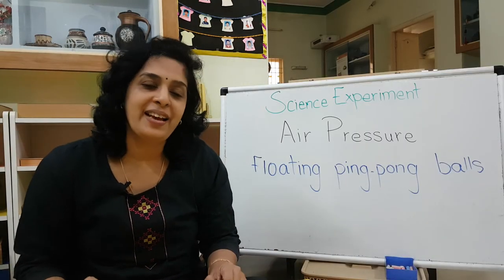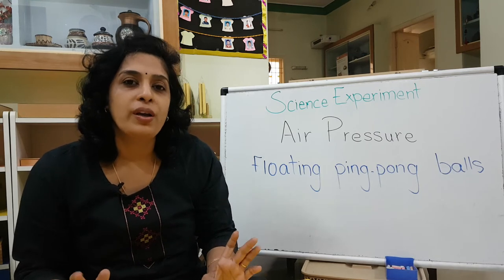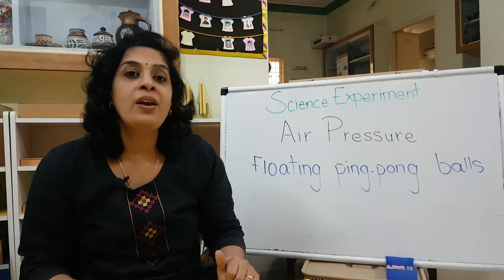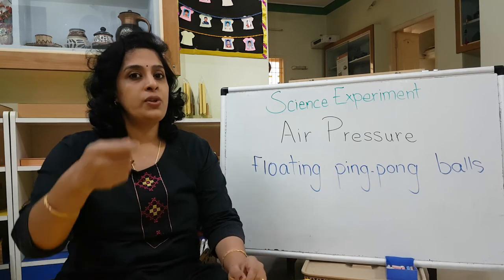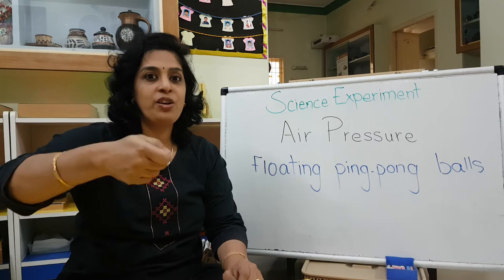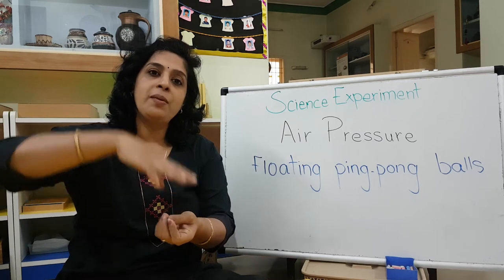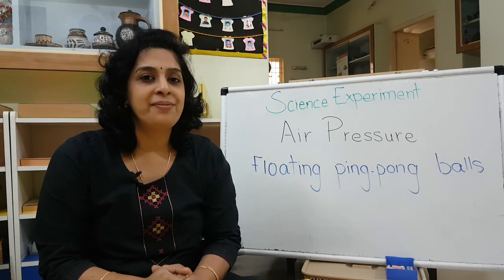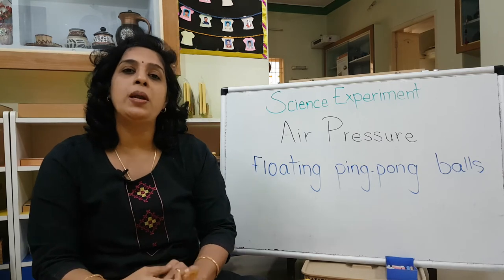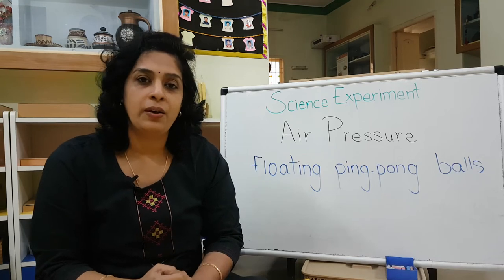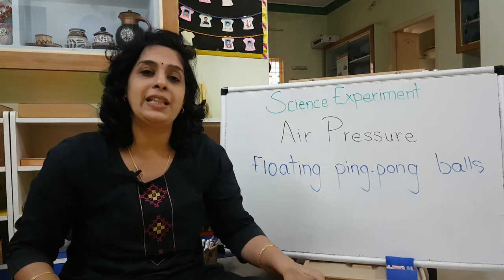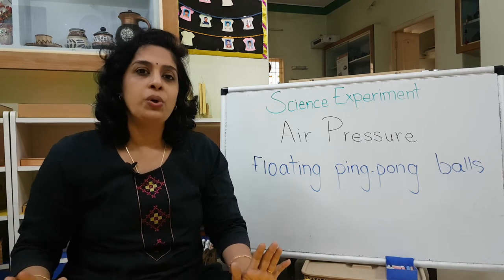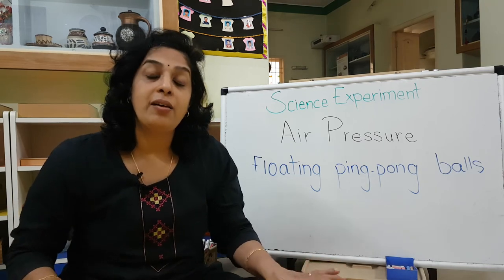That is this month's science experiment — trying to float a ping pong ball. Did you all enjoy it? Please try it, either with a hair dryer or a vacuum cleaner. When I was moving the hair dryer and bouncing the ball, it stayed afloat. How is it able to stay floating? Because of air pressure — that is the word you are learning today. The pressure exerted on the ball is helping it stay there.